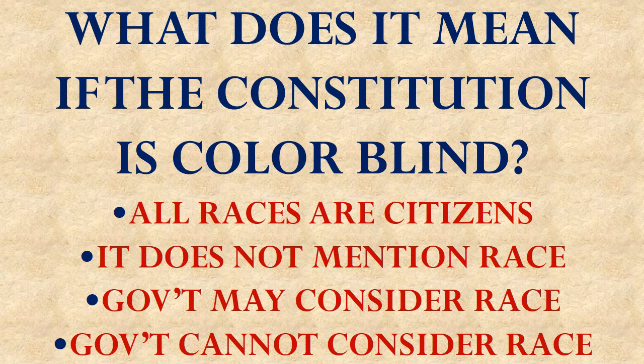What does it mean if the Constitution is colorblind? It means that the government cannot consider race when it does things. A colorblind Constitution would mean, for example, that affirmative action would not be allowed.